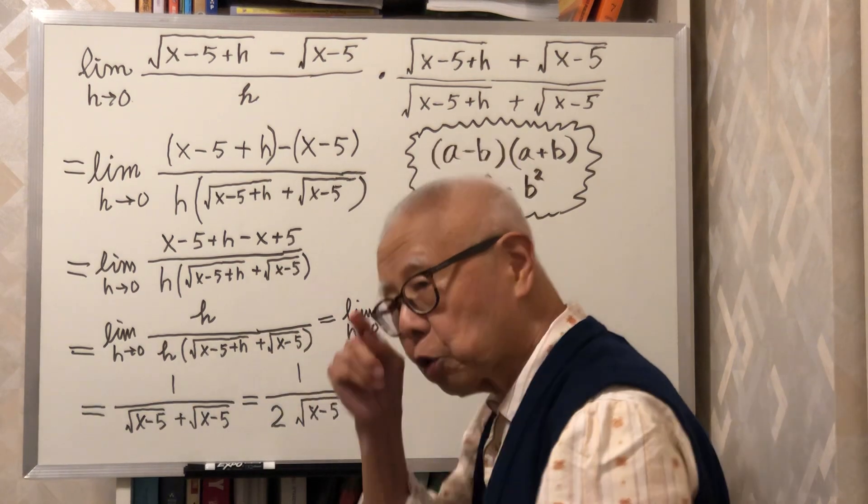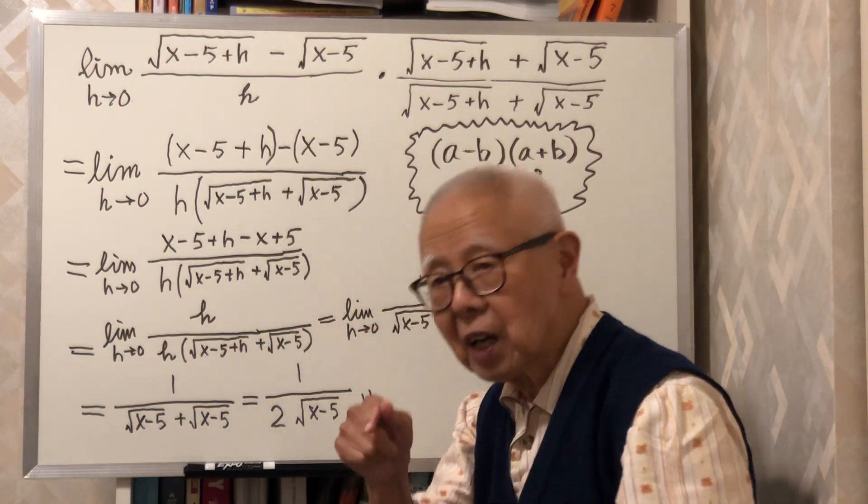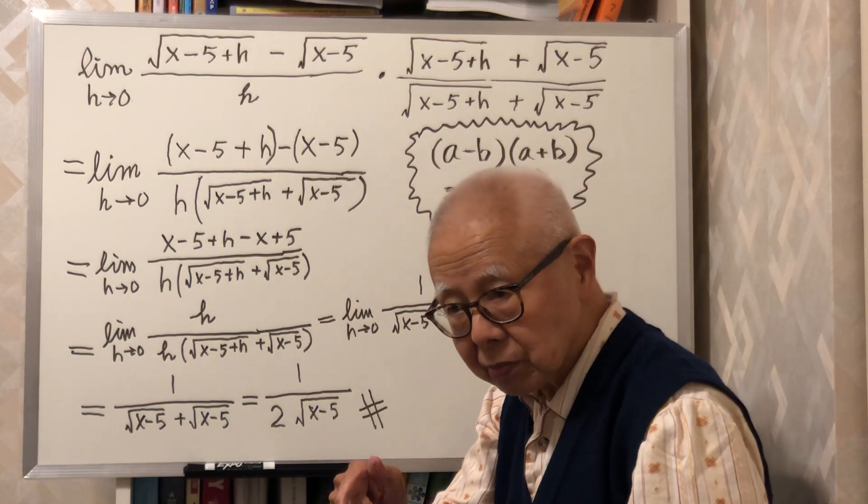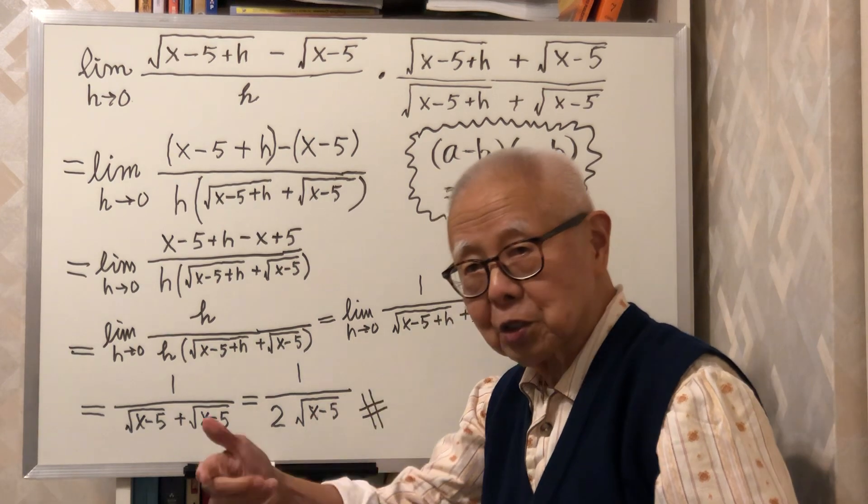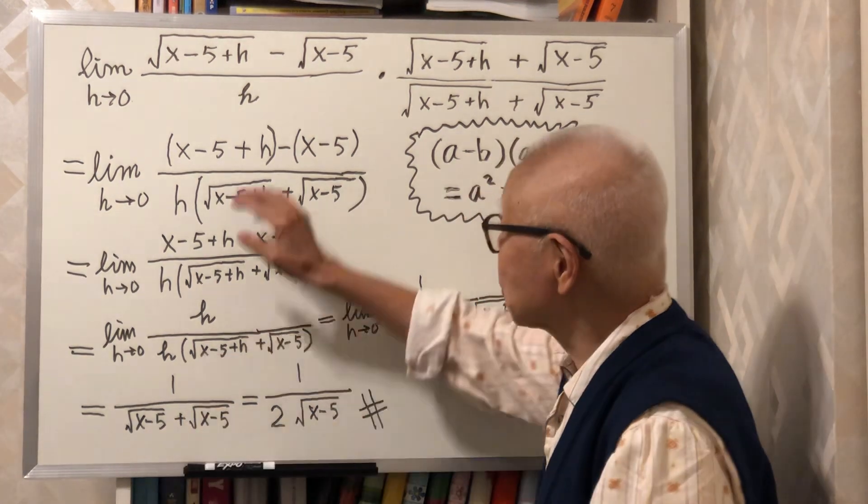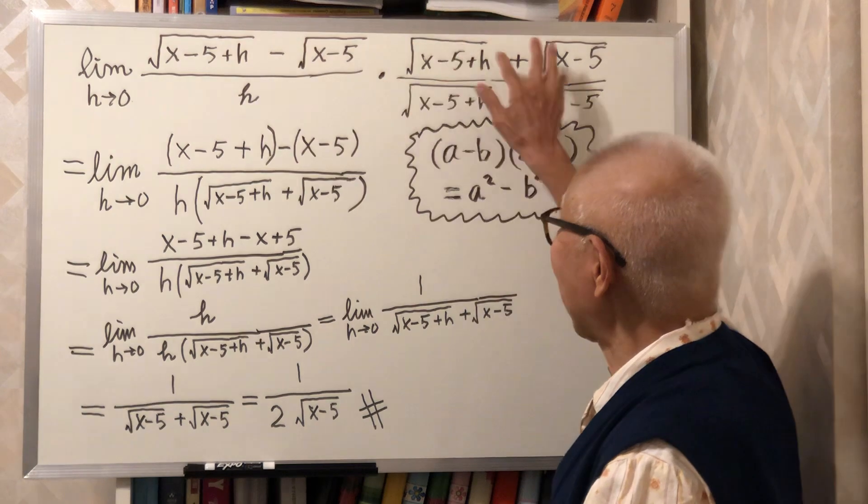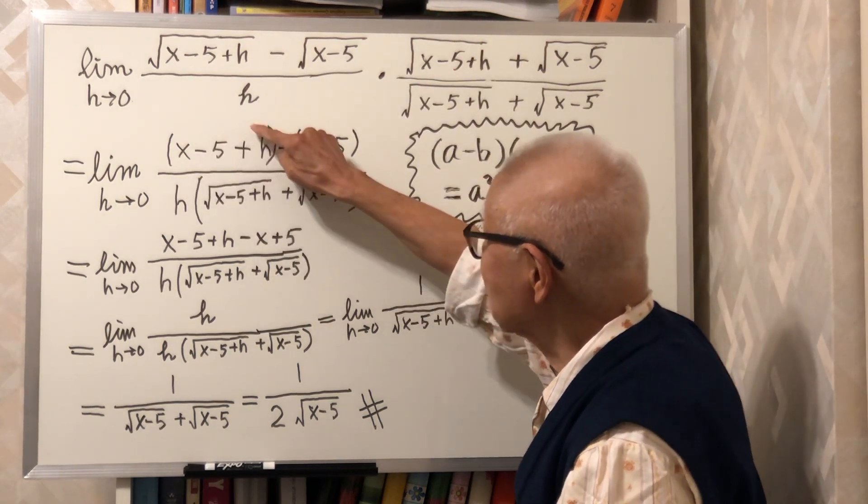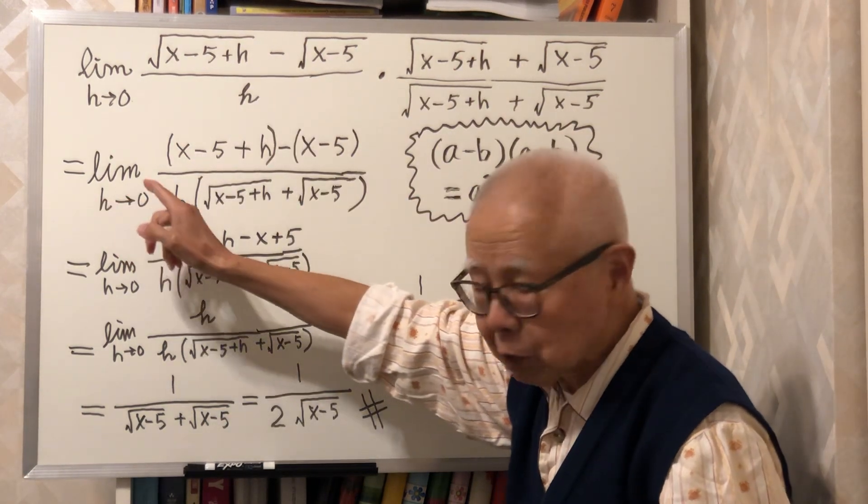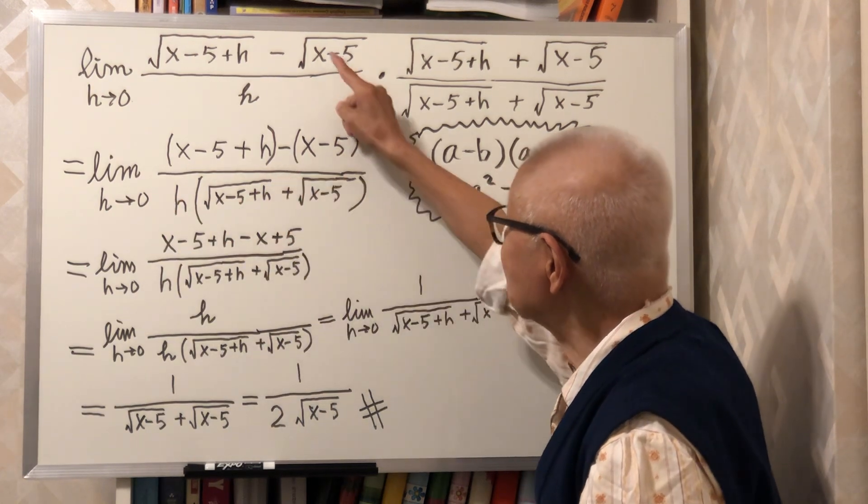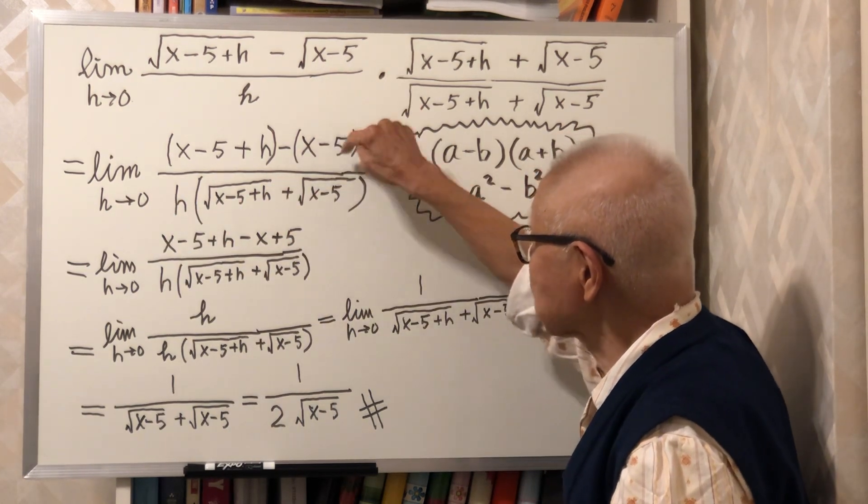When you square a square root, the square root disappears. So multiply this with that, you get this. No more square root. Minus this. No more square root.